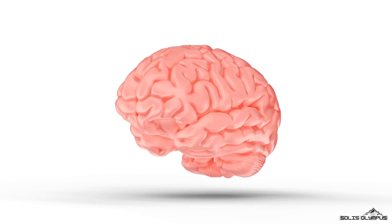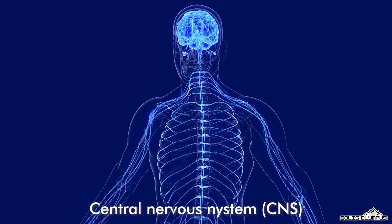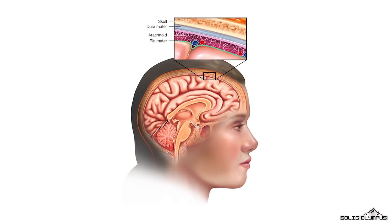The average adult brain weighs around three pounds. Together the brain and spinal cord make up the central nervous system or CNS.